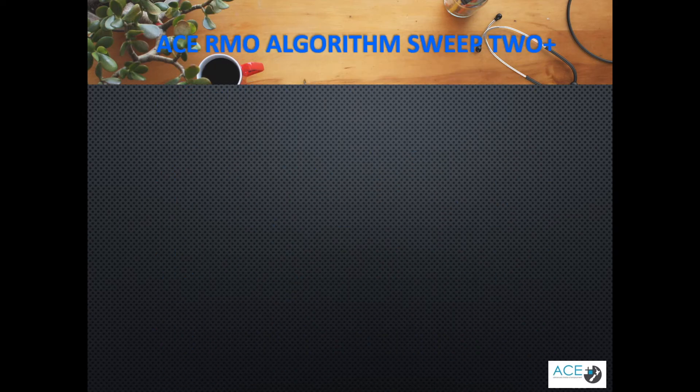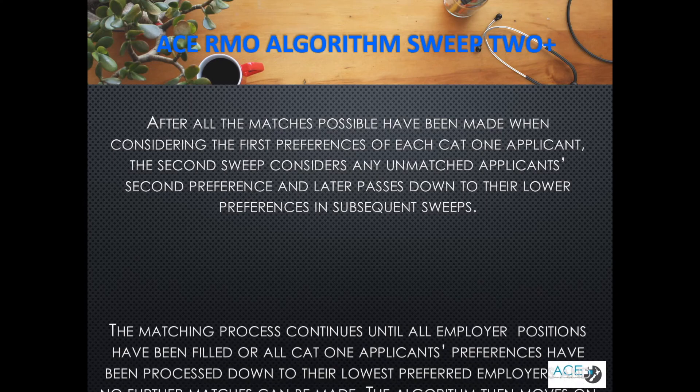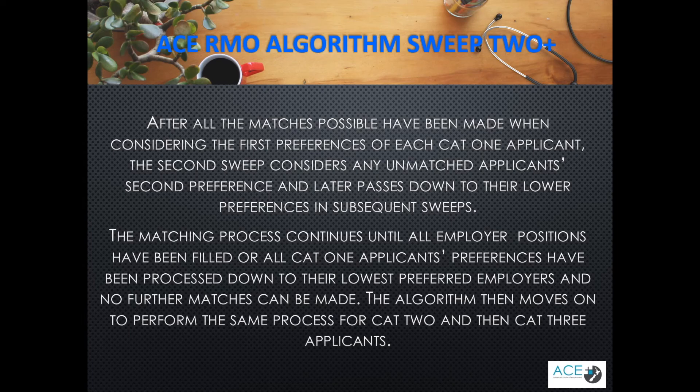If there are positions available following the first sweep of all the DHBs, it will then perform a second sweep matching applicants to their second preference if that DHB has vacancies. The algorithm will continue until all of the positions have been filled or the applicant preferences have been exhausted and no other applicant can be matched.